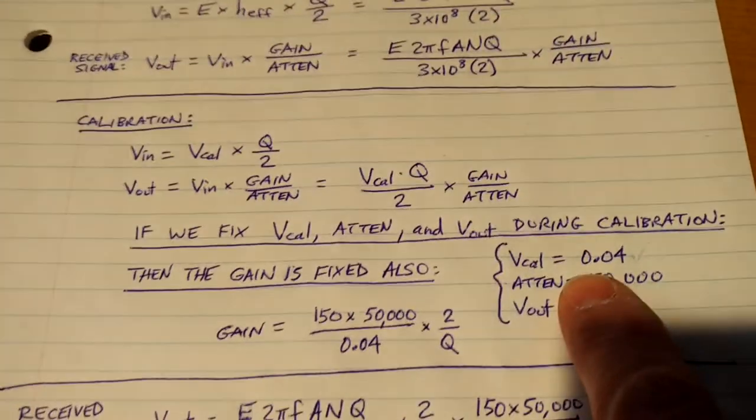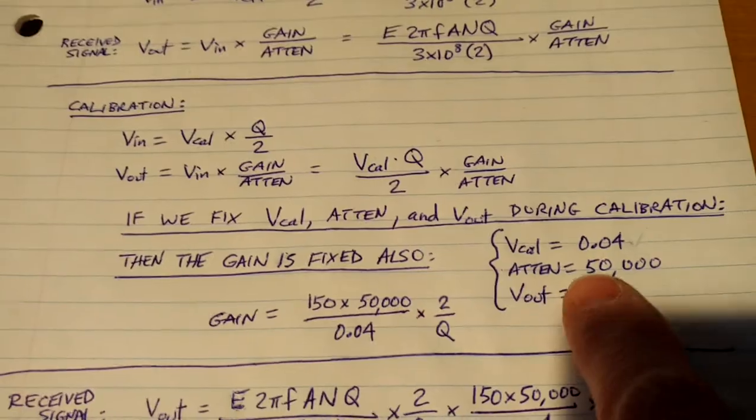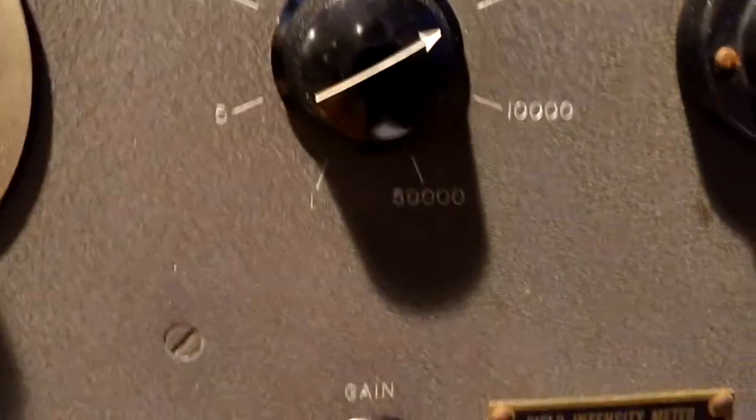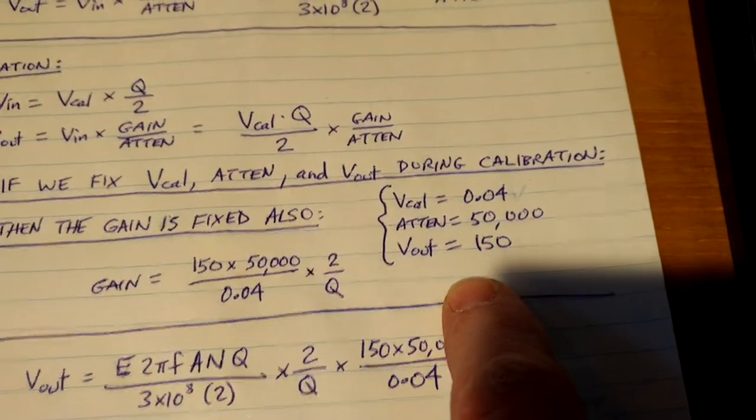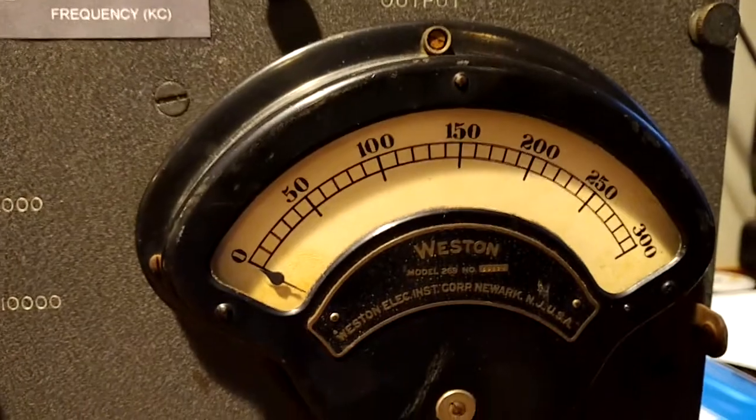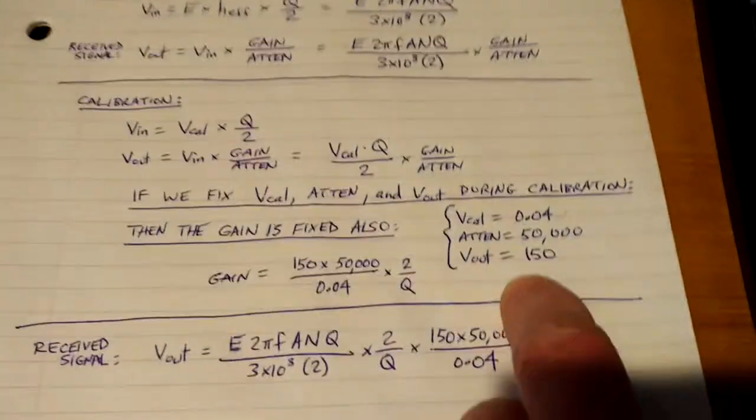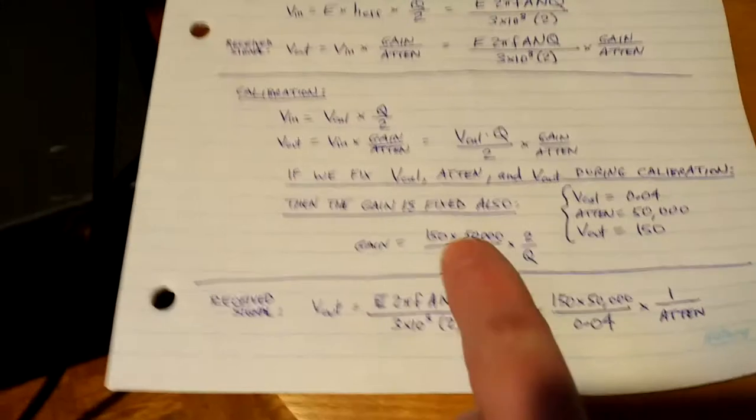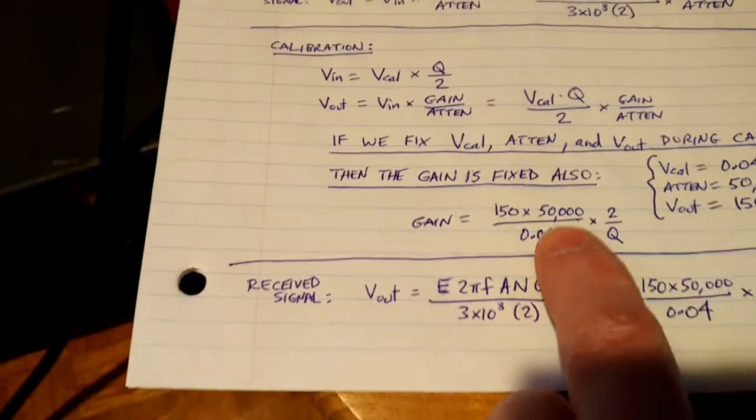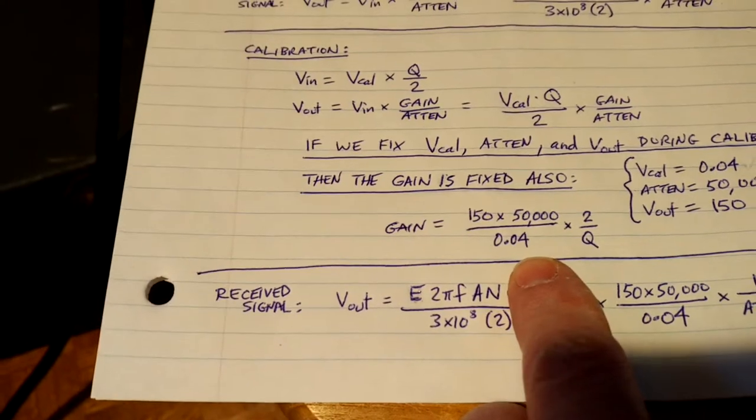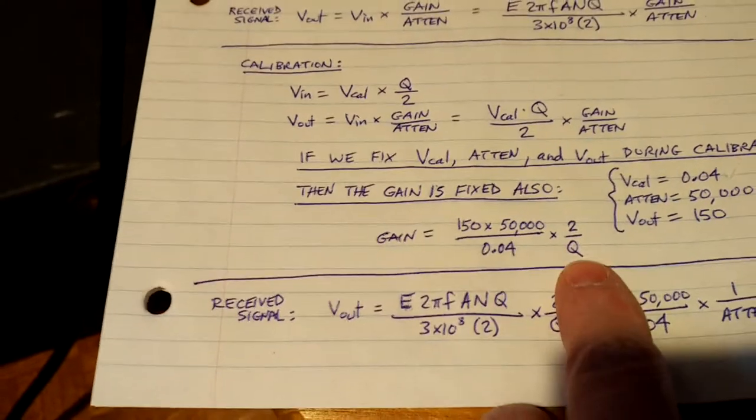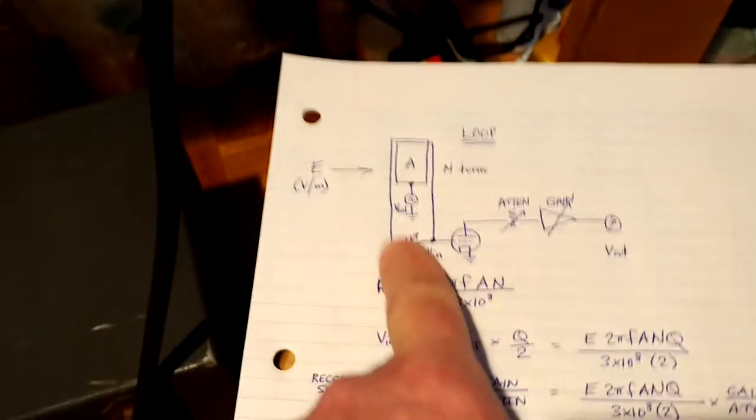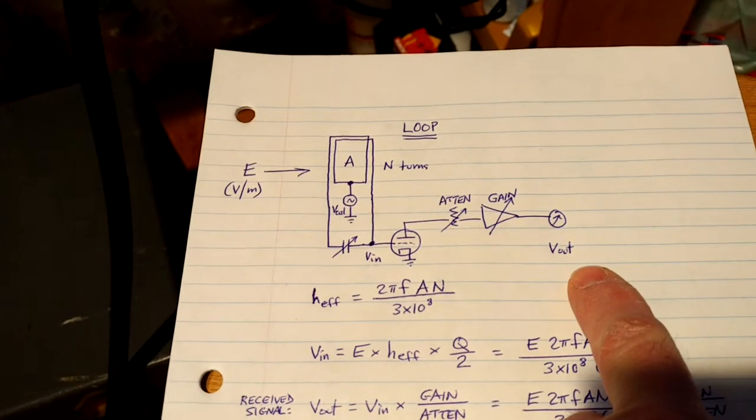So the RCA book recommends the following. The calibration voltage will be 40 millivolts, or 40,000 microvolts. The attenuator will be set to 50,000, which is right at the end, because we've got a very strong signal coming in here. And we're going to decide on mid-scale on the output meter, 150. So when you fix these, the gain is the only variable left in this formula. So that fixes the gain. So if you put those numbers in, you get 150 times 50,000 over 0.04 times 2 over Q. So that is the gain from the calibration voltage all the way to V out on that meter.